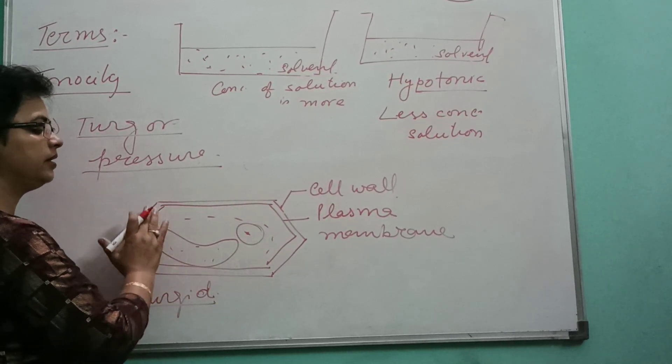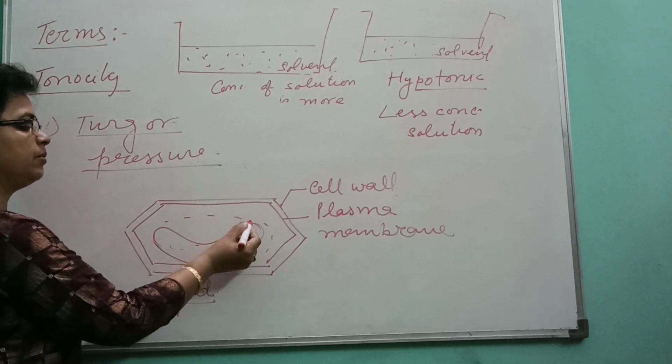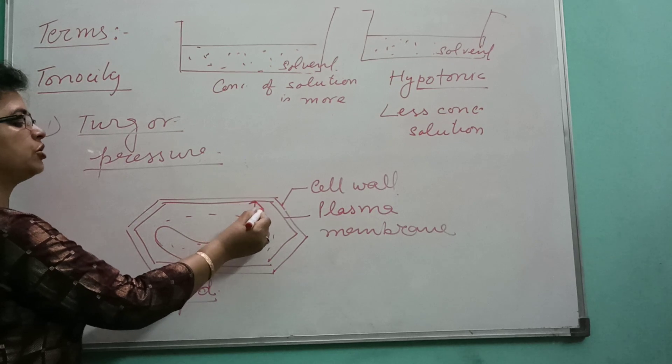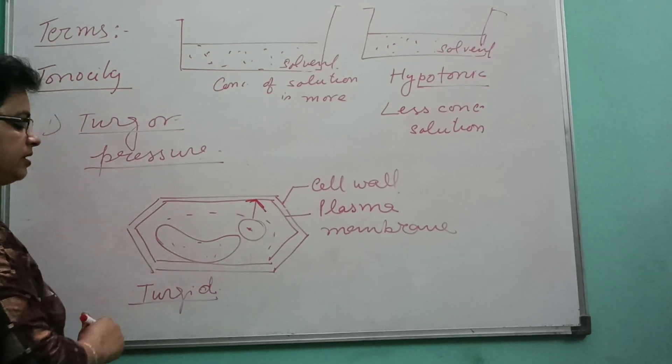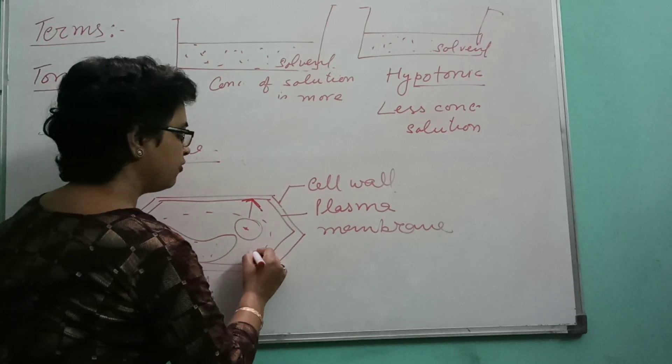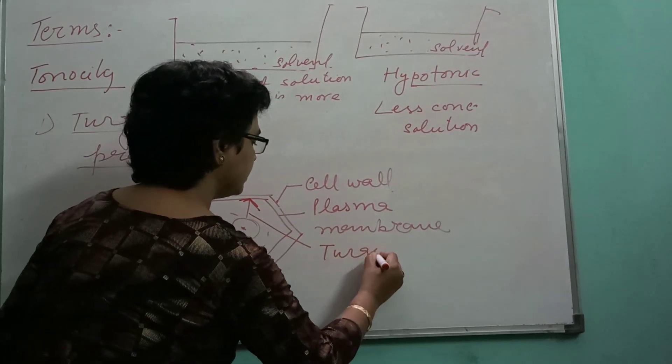As this condition of the cell is turgid, this type of pressure is termed as turgor pressure.